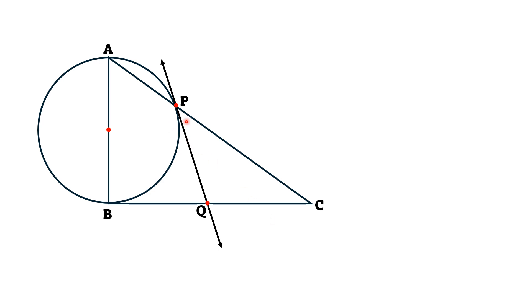First of all, we draw a line segment from point P to B which is perpendicular to the line AC. This angle APB is 90 degrees and in the same manner the angle BPC is 90 degrees.